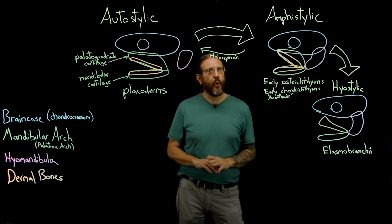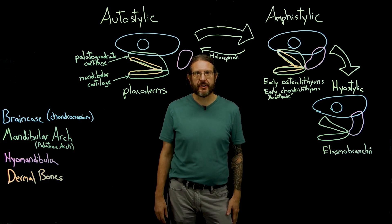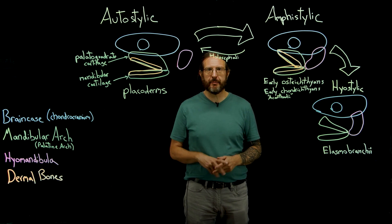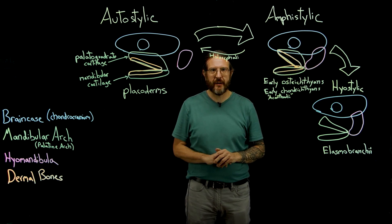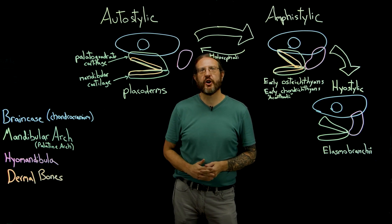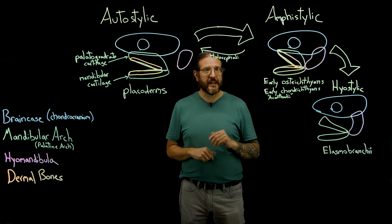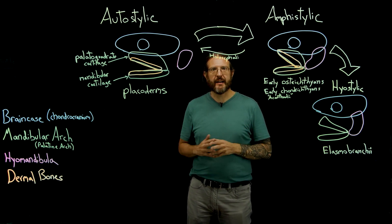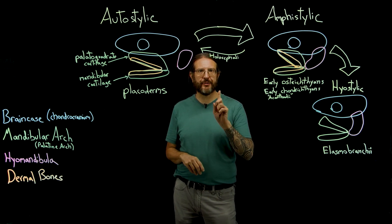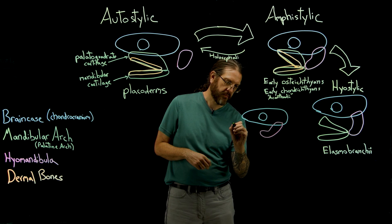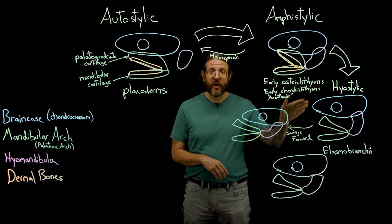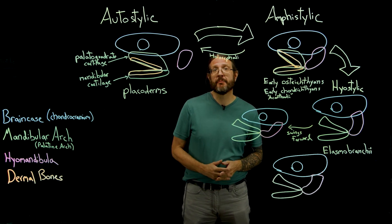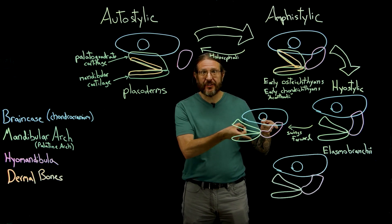Hyostylic is wonderful for a lot of reasons that we'll explore in a separate lecture. But for right now, let me illustrate how this jaw type allows a motion that's not possible with an autostylic or an amphistylic jaw, in which the lower jaw joint is fixed in place. Specifically, by breaking the connection between the upper jaw and the brain case, hyostylic allows a fish to protrude its jaws simply by swinging the hyomandibula forward. Here I've shown the jaws that have swung forward. If you've ever seen a shark bite, you'll have noticed that the jaws seem to move independently of the rest of the head, and this is how they do it.